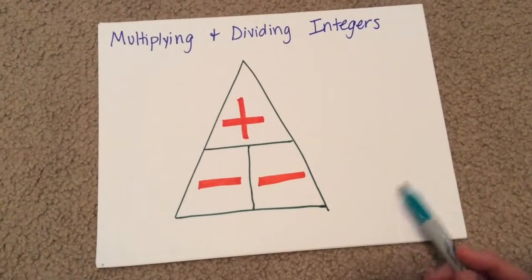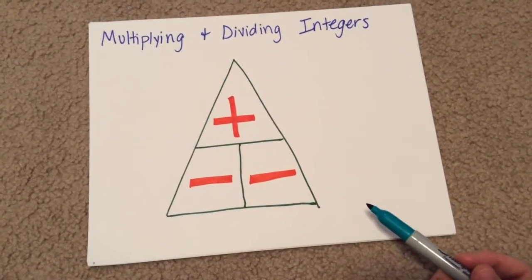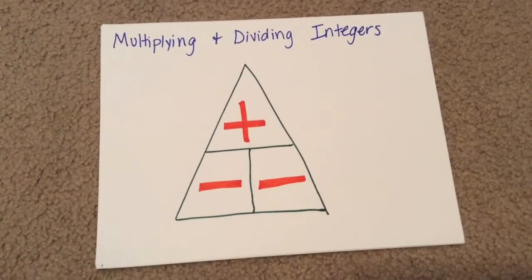So remember, if you're multiplying a positive times a positive, that's just like you've been doing since elementary. Two times three is six.